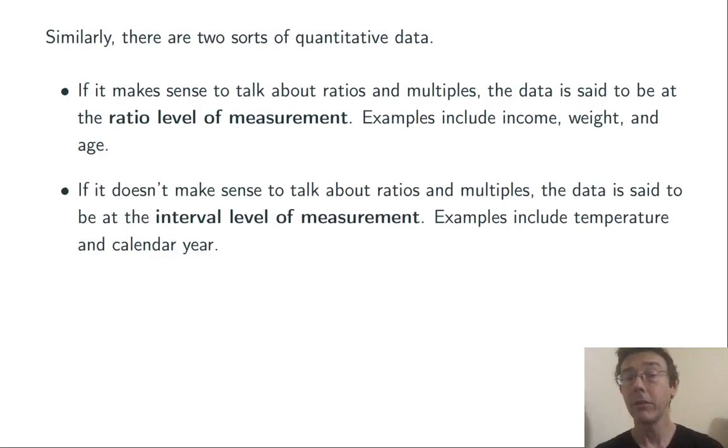If it doesn't make sense to talk about ratios and multiples, the data is said to be at the interval level of measurement. Examples include temperature and calendar year. We don't want to say that something is twice as hot as something else, because if we change from Celsius to Fahrenheit, that statement could go from true to false or false to true.